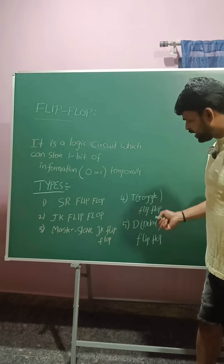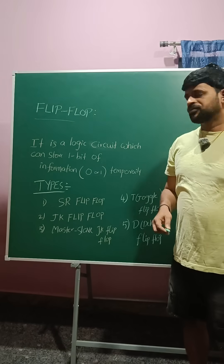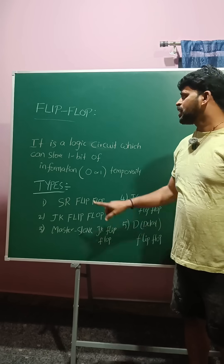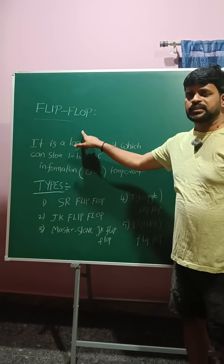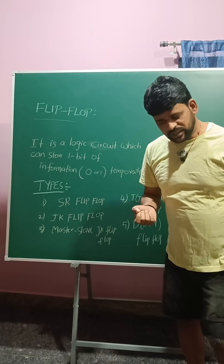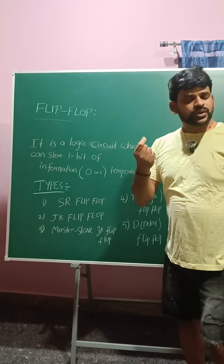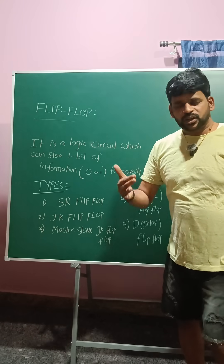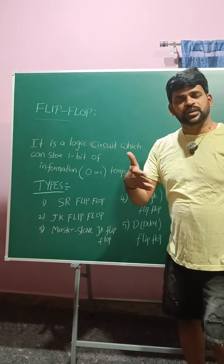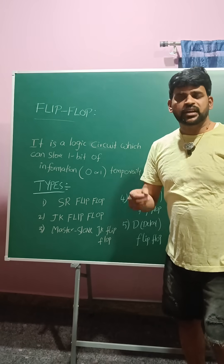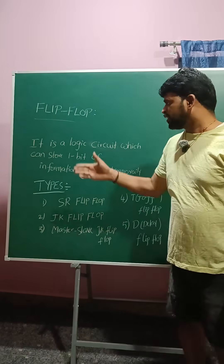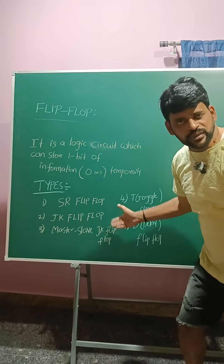The fifth type is the D flip-flop, also called the Delay flip-flop. So those are the five types of flip-flops. If we want to store more than one bit, we need multiple flip-flops — two bits require two flip-flops, three bits require three flip-flops, and so on.